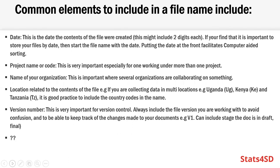Common elements that are encouraged to include in file names or naming conventions: the date, which shows when the contents of the file were created, using the ISO format with four digits for year and two digits each for month and day. If organizing your data by date is very important, it's advisable that your file name starts with a date. Also include the project name or code, especially if you're working with more than one project.